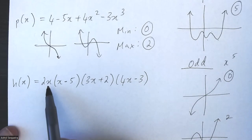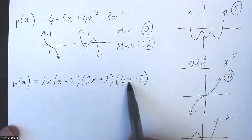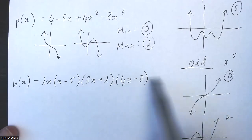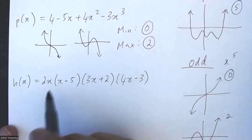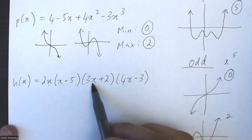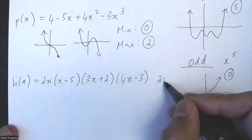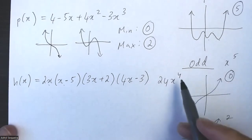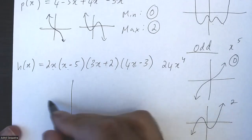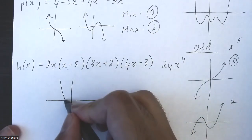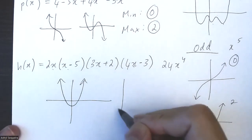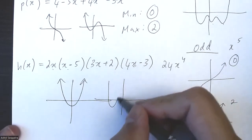For this last question, it's in factored form, so let's multiply all our x terms to get our coefficients and degrees. Two x times x is 2x squared, times 3x is 6x cubed, times 4x is 24x to the fourth. So this is an even function of degree four with a positive coefficient. I know it's going to have a minimum of one turning point and a maximum of three turning points.